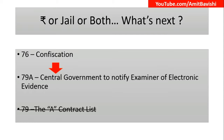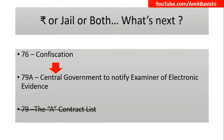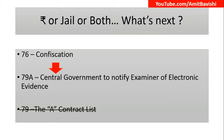Section 79 — which is also included in the Act — covers exemption from liability of intermediaries in certain cases. So to recap: Section 76 is Confiscation, and Section 79A deals with the Central Government notifying examiners of electronic evidence.